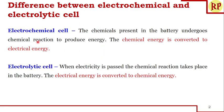First, let us understand the difference between an electrochemical cell and an electrolytic cell. In an electrochemical cell, the chemicals present inside the battery undergo a chemical reaction to give us electricity. That is, chemical energy is converted to electrical energy.